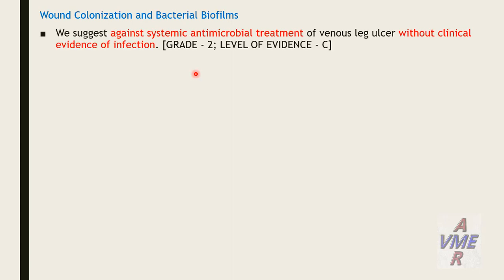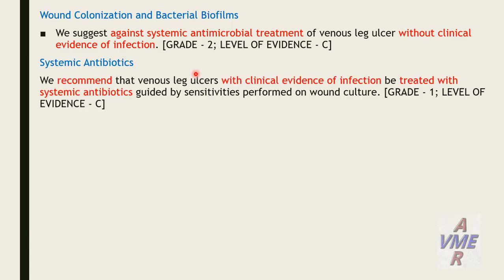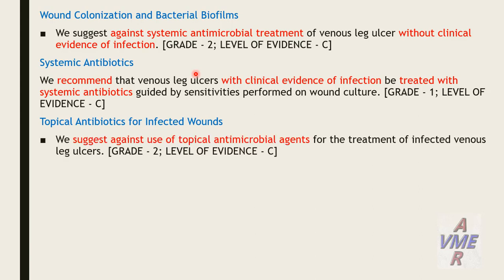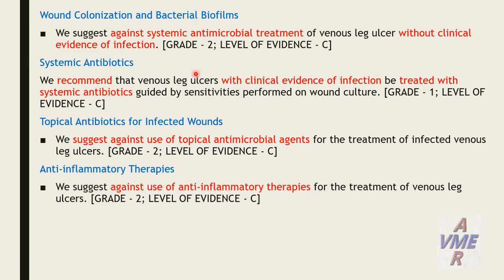Wound colonization and bacterial biofilm: we suggest against systemic antimicrobial treatment for venous leg ulcer without clinical evidence of infection. Systemic antibiotic: we recommend that venous leg ulcer with clinical evidence of infection be treated with systemic antibiotics guided by sensitivity testing performed on wound culture. Topical antibiotic: we suggest against use of topical antimicrobial agents for treatment of infected venous leg ulcer. We also suggest against use of anti-inflammatory therapy for treatment of venous leg ulcers.